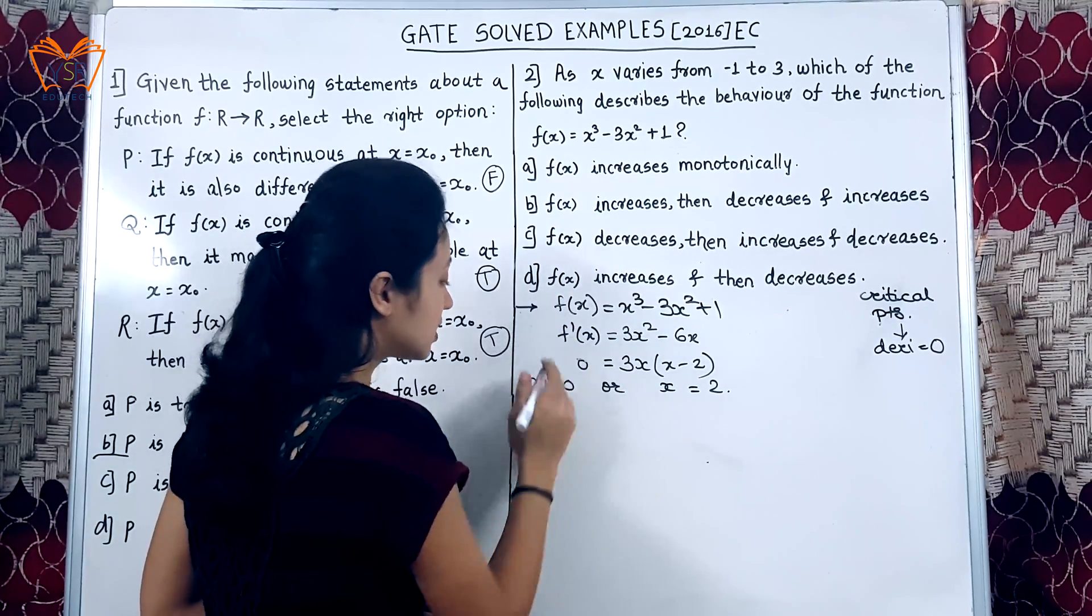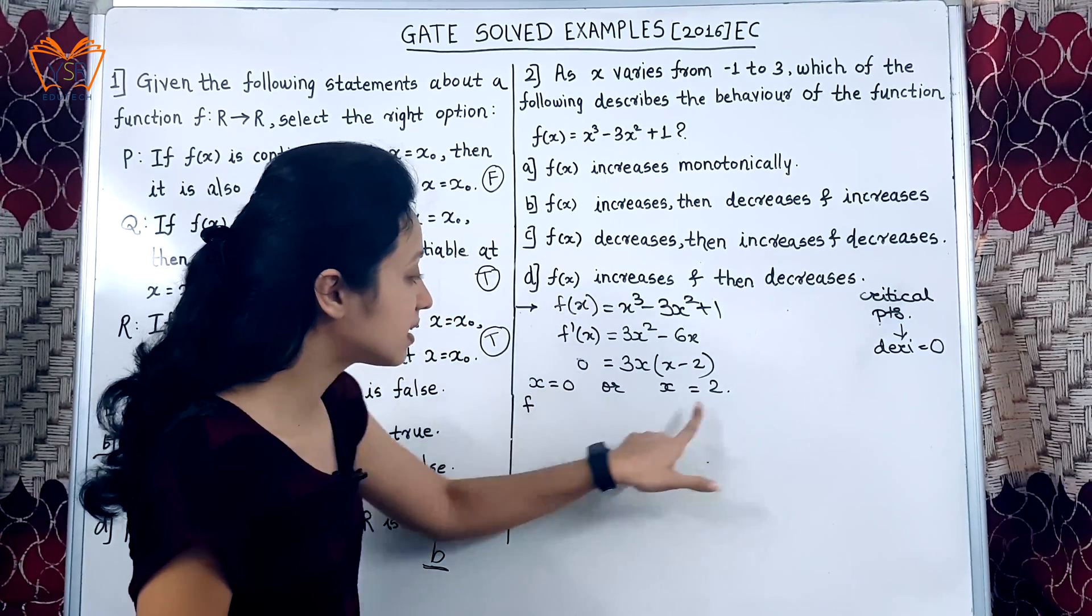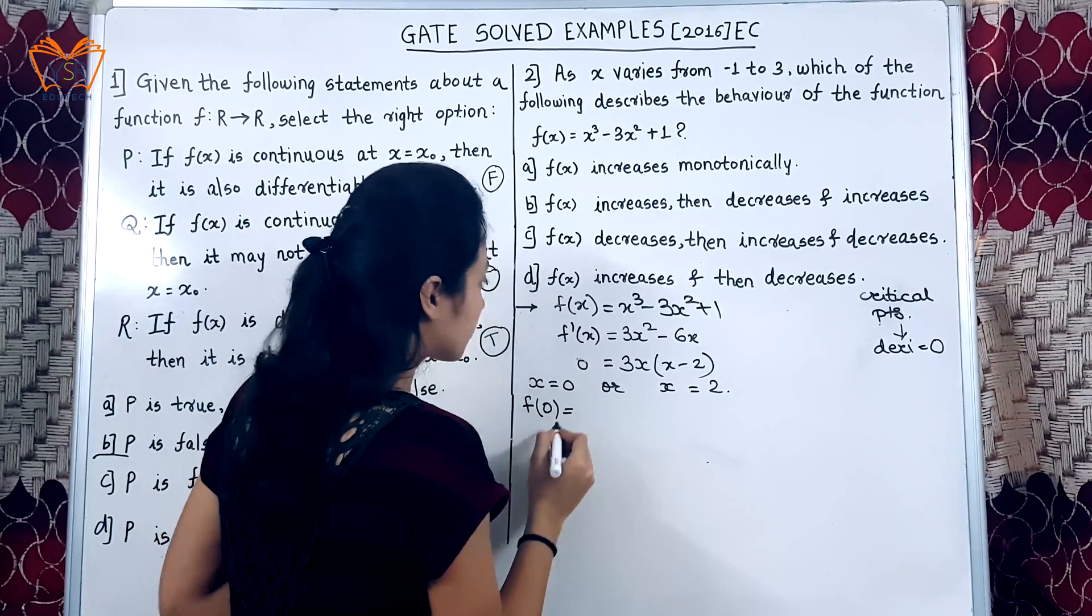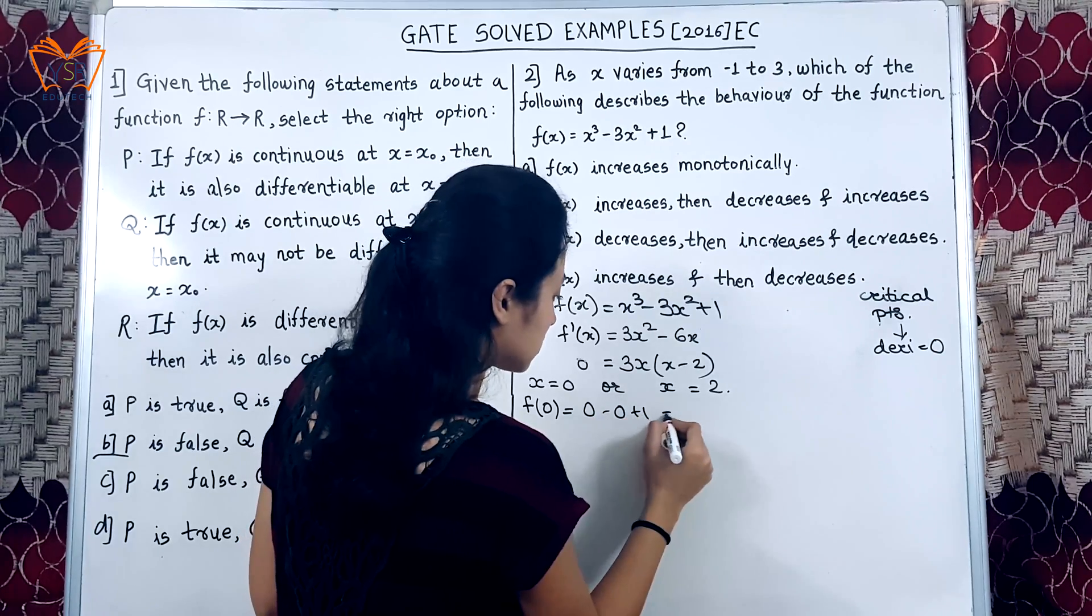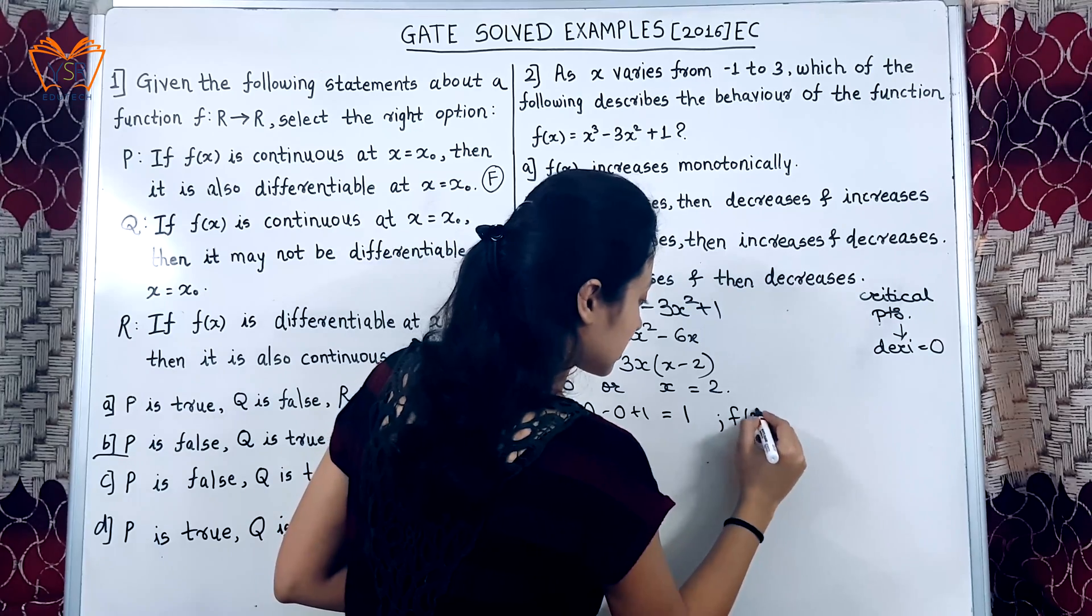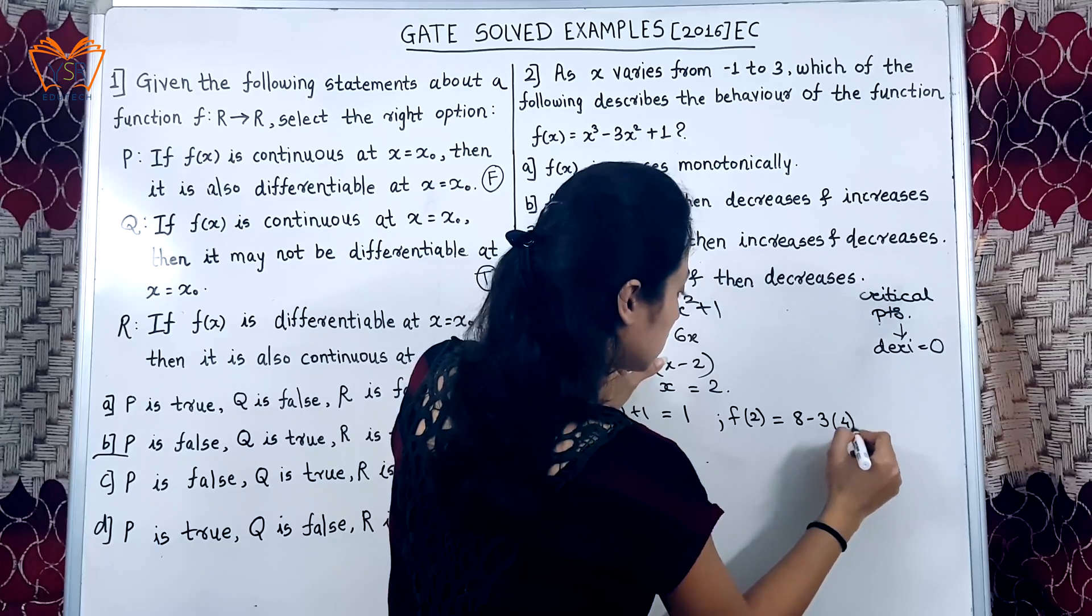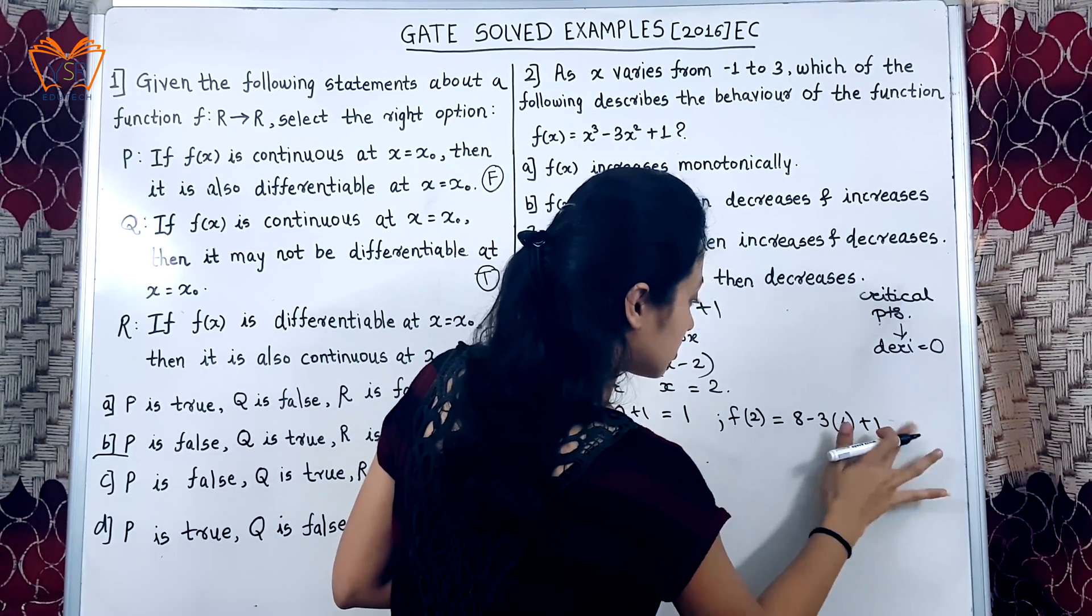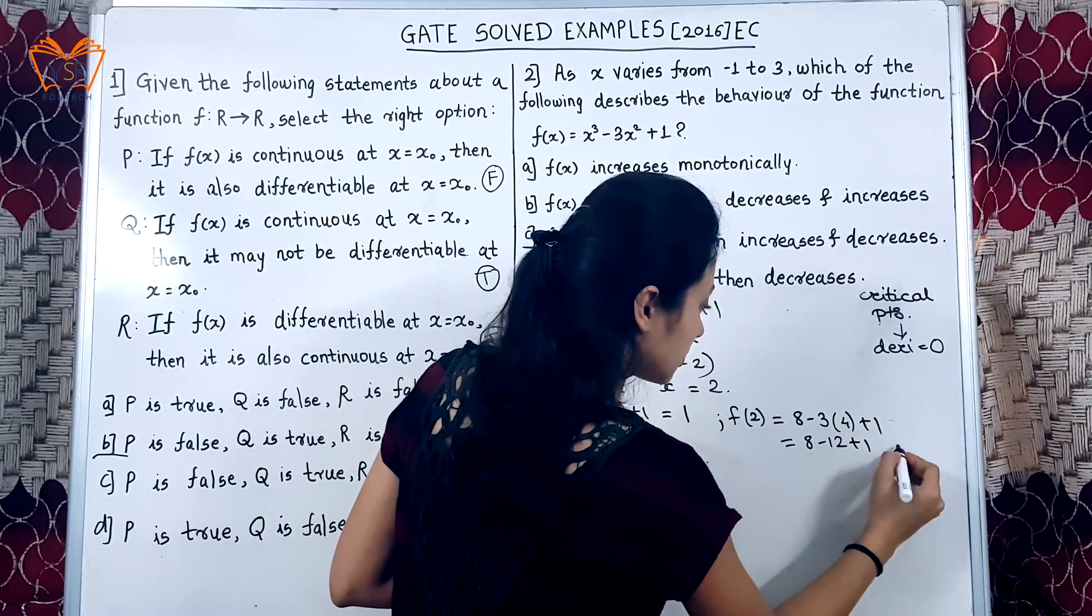Let us substitute these critical points in the given function value. So, that we will get the value of function at these critical points. First we will substitute 0. The function will be 0 minus 0 plus 1 and now we will substitute the second critical point. This will be 8 minus 3 into 4 plus 1.